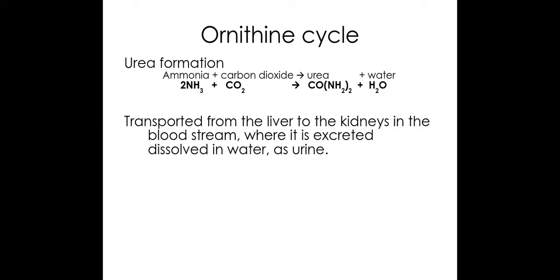Urea is formed from the ornithine cycle, which occurs in the hepatocytes — in the liver cells. Ammonia is added to carbon dioxide to form urea and water. You need to know these formulas shown at the top. The urea is then taken to the kidneys in the blood, where it is excreted and dissolved in water to make urine.